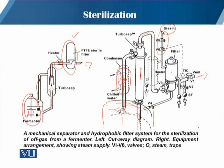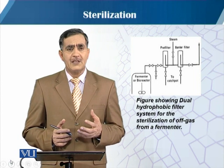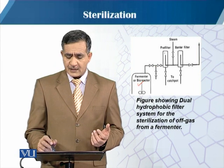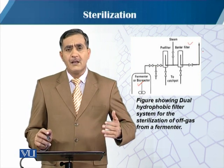This illustrates how exhaust air sterilization works and the mechanism of using pre-filters and pre-treatment before treating the exhaust gas. The dual hydrophobic filter system for sterilization of off-gas is shown here: the fermenter feeds into a pre-filter, then a steam barrier filter, and then the steam exits.